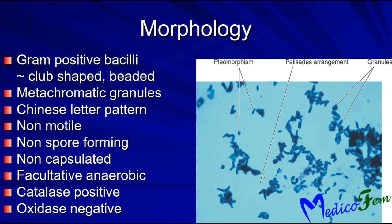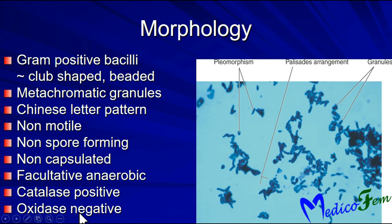Corynebacterium morphology helps in diagnosis. They are gram-positive bacilli, club-shaped, with metachromatic granules. In direct gram smear they show a Chinese letter pattern. They are non-motile, non-spore-forming, and non-capsulated. They are facultative anaerobic, catalase positive, and oxidase negative.